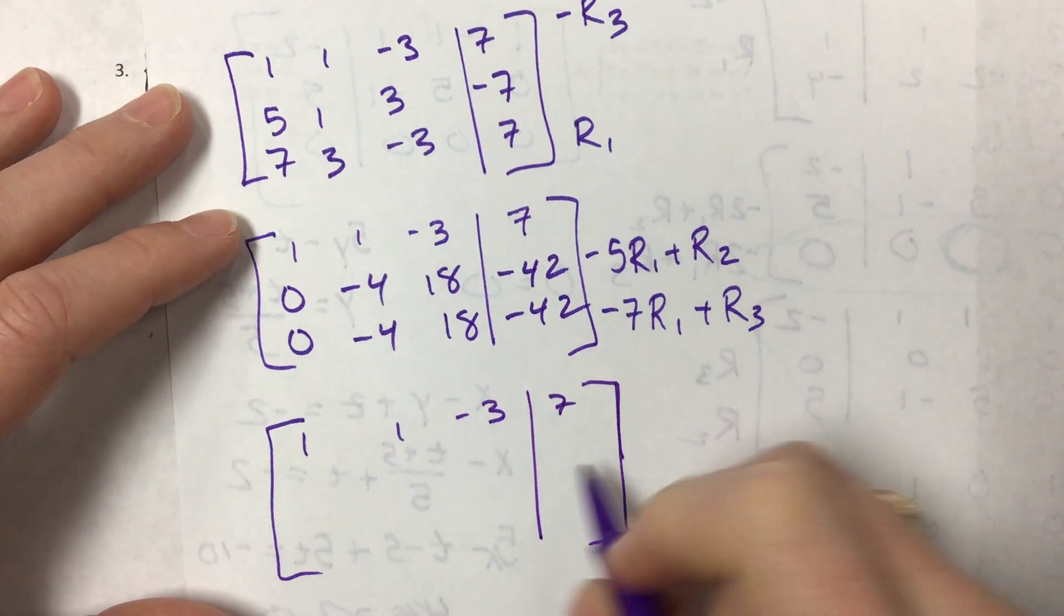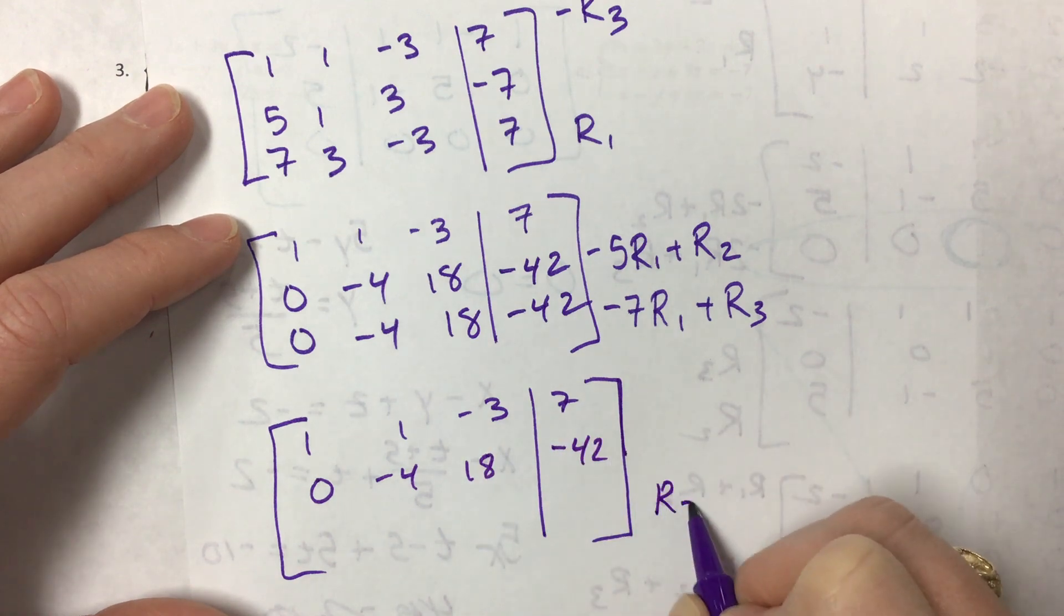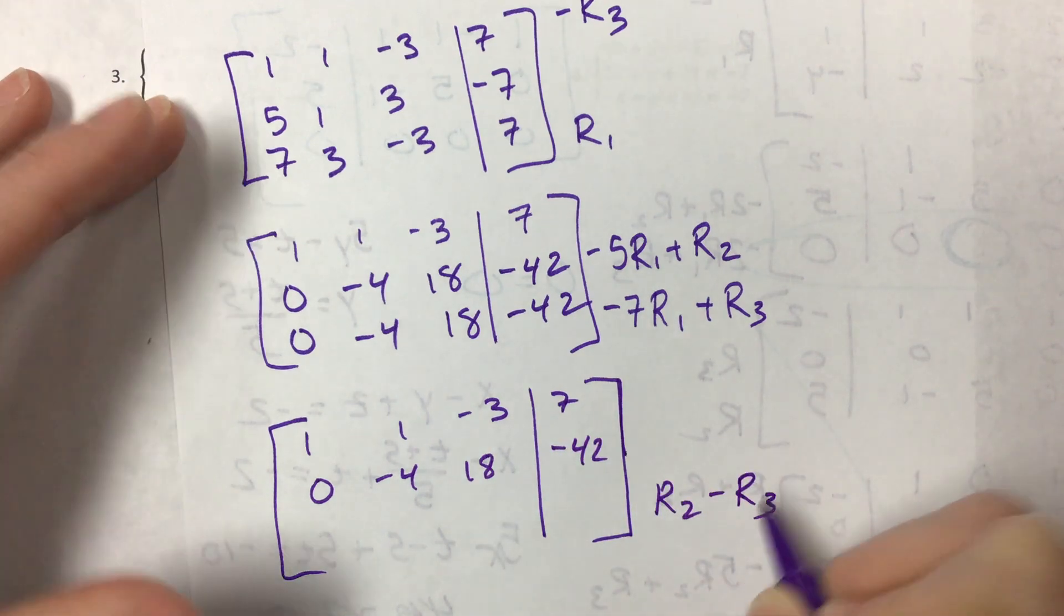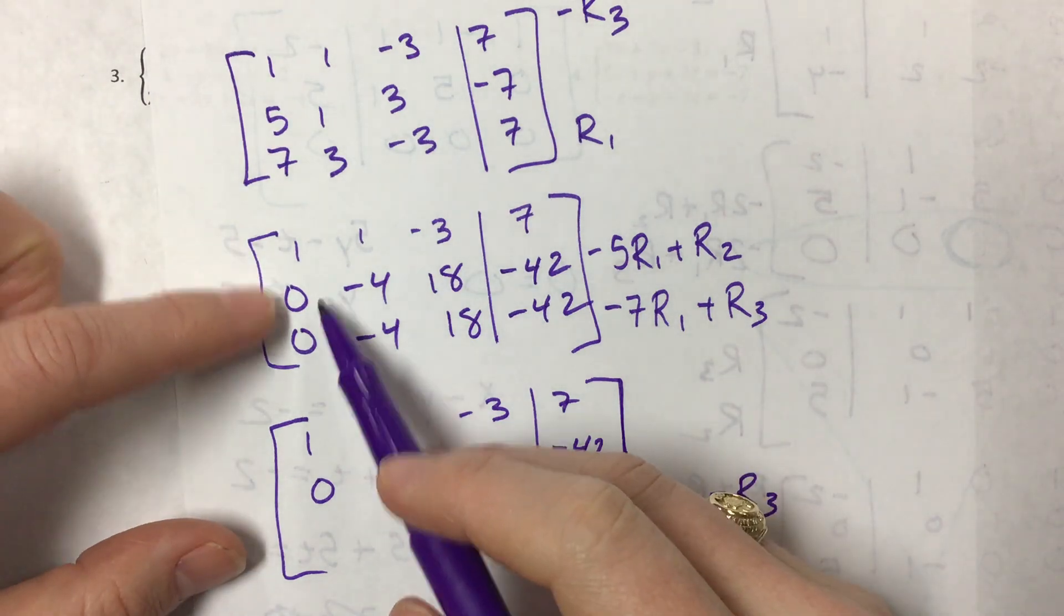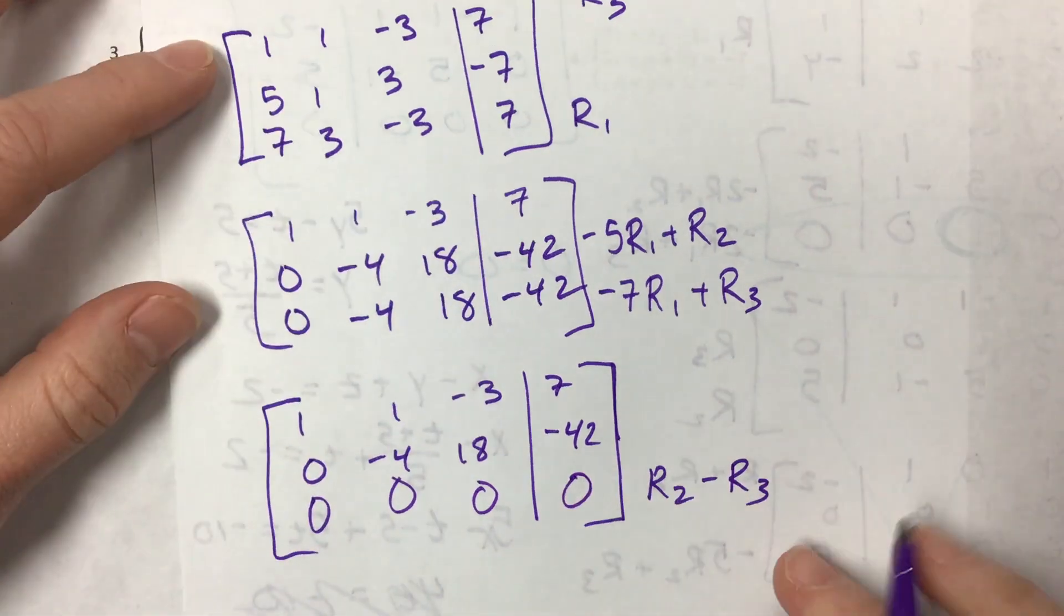Yep, I can just take, here's row two, I can just take row two and then subtract row three. Or one of them negative this and make that positive - that's zero, that subtracts to zero, that subtracts to zero.